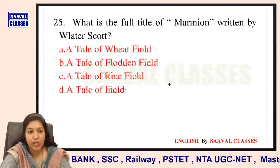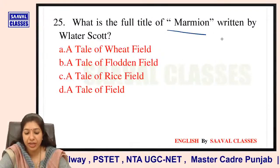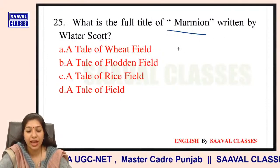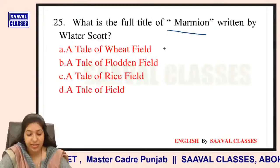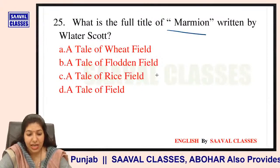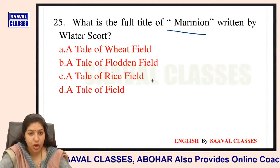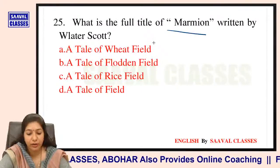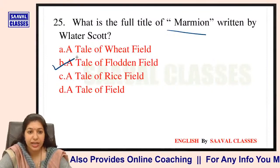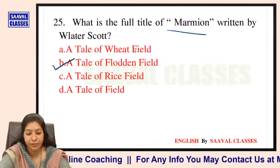Question number 25: What is the full title of Marmion written by Walter Scott? Options are: a tale of wheat field, tale of Flodden Field, tale of rice field, ya tale of field. The full title of Marmion is 'A Tale of Flodden Field'.